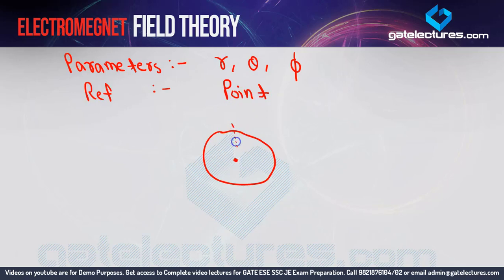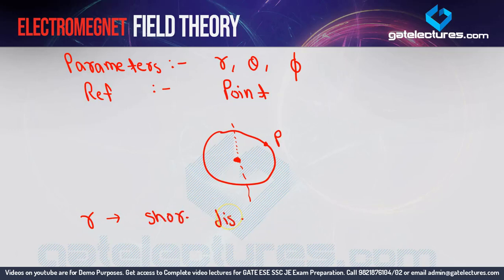Suppose I draw an imaginary axis passing through the center. Here r is the distance from center to point P. You can call it radius — no problem. So r is actually the shortest distance from the reference point to the point P which you have taken.